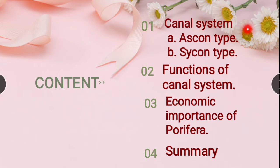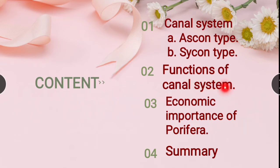We will discuss the canal system. In the canal system there are four types: Ascon type, Sycon type, Ragon type, and Leucon type. I will explain only two types: Ascon type and Sycon type. Next, functions of the canal system, and economic importance of Porifera or sponges. I will conclude with a summary.